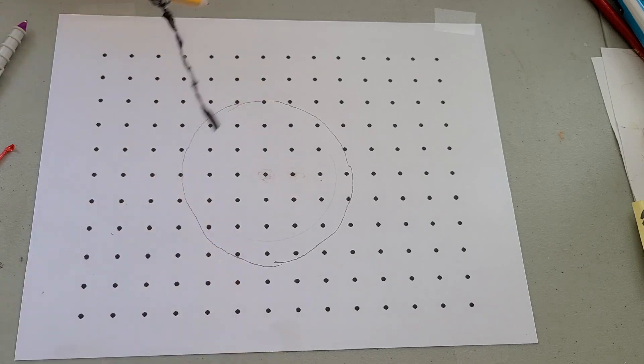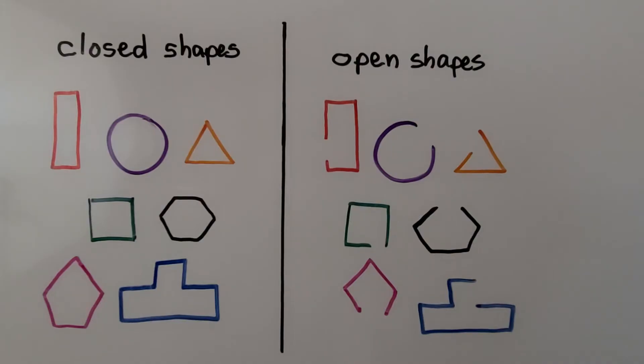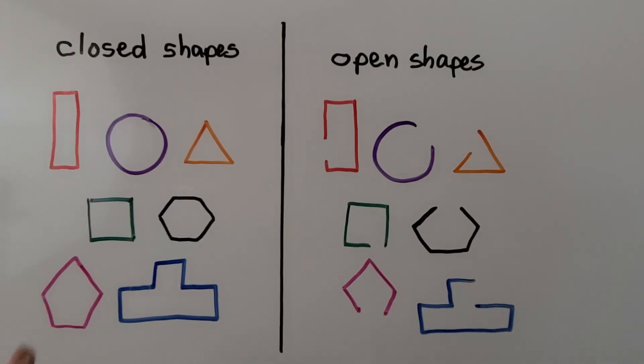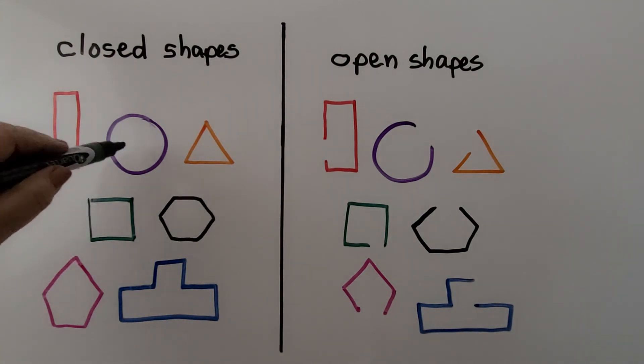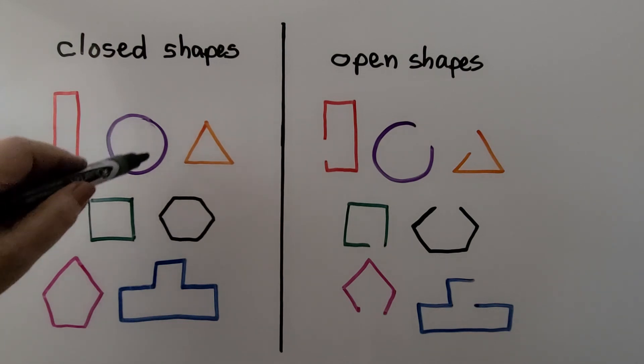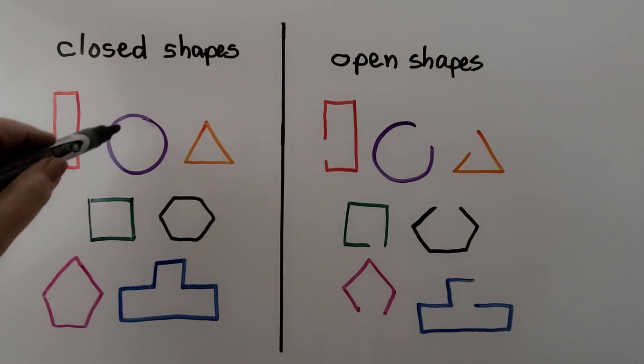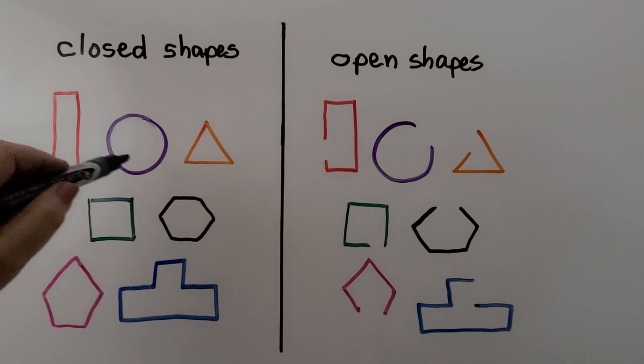There are closed shapes and open shapes. These are closed shapes. If we were inside, we wouldn't be able to get out. There's no opening. So if this was a fence, we wouldn't be able to get out if it was a tall fence.